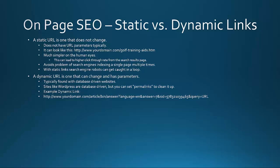An example dynamic URL would be: yourdomain.com/article/bin/answer?language=EN&answer=7&SID=578, with a session ID tied into it. What can happen is that session IDs, if your URL structure looks like this, mean the search engines' spider robots may view that as one page, then come back two weeks or a day later, and end up seeing the same result five times — causing duplicate content issues within the various search engine databases.